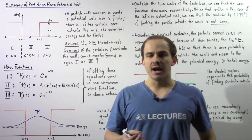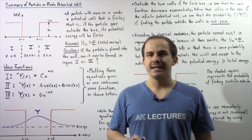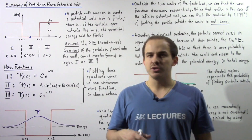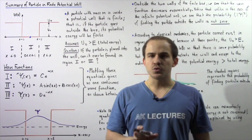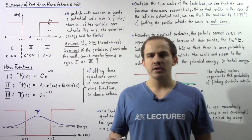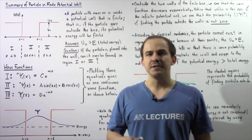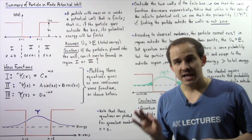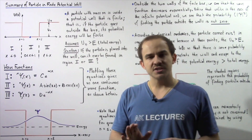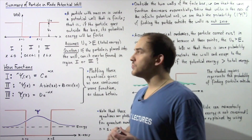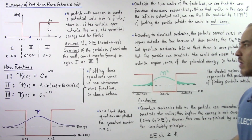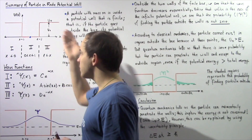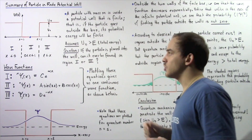In the previous lecture, we discussed a particle found inside a finite potential well. We were able to determine the wave functions that describe the motion of our particle inside that finite potential well. In this lecture, we're going to summarize the results we obtained as well as discuss some of the implications of the particle in the finite potential well. Let's begin by recalling what a particle inside a finite potential well is.